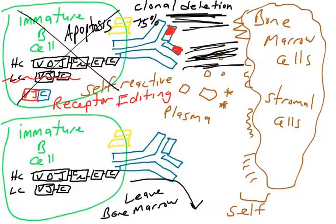This tolerance we refer to as central tolerance. This B cell has shown itself to be tolerant of molecules found in the central lymphoid organ, the bone marrow. The bone marrow is a central lymphoid organ. So this B cell gets to leave the bone marrow. It's finally got permission to leave, but it's still not fully activated.